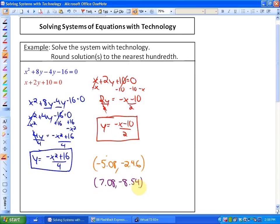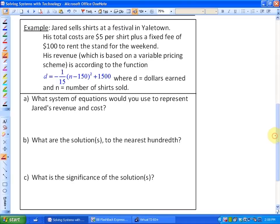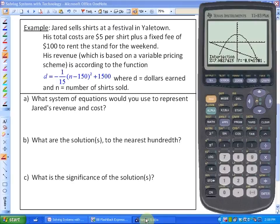In our final example we're going to look at a word problem. Jared sells shirts at a festival in Yaletown. His total costs are $5 per shirt plus a fixed fee of $100 to rent the stand for the weekend. His revenue, which is based on a variable pricing scheme, is according to the function d equals negative 1/15th (n minus 150) squared plus 1500, where d is dollars earned and n equals the number of shirts sold.